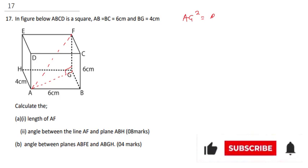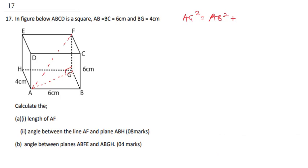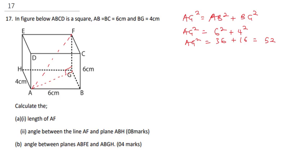To find line AG: AG² = AB² + BG². So AG² = 6² + 4², which gives us AG² = 36 + 16 = 52.